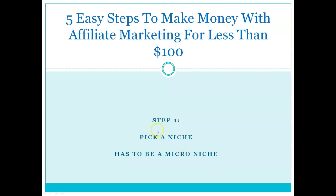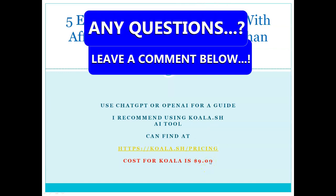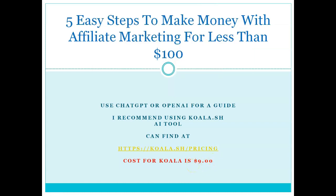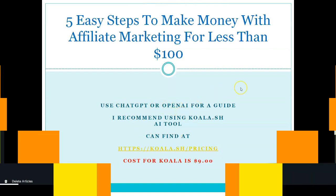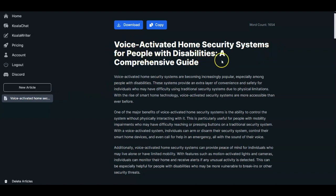Step one is to pick a niche, and I would say it needs to be a micro niche — a very specific small area of a large area. I'm going to suggest using ChatGPT or any OpenAI tool as a guide. I also recommend a tool called Koala.sh as an AI tool. Koala has special pricing at nine dollars a month. We'll go through that and show you what it does for you and how it differentiates from using ChatGPT or OpenAI as your source.